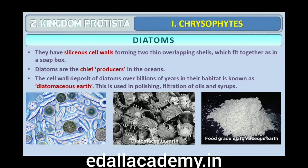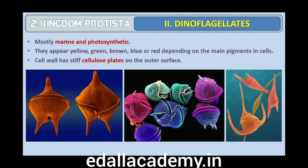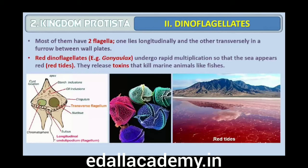Second are dinoflagellates. These organisms are mostly marine and photosynthetic. They appear yellow, green, brown, blue or red depending on the main pigments present in their cells. The cell wall has stiff cellulose plates on the outer surface. Most of them have two flagella — one lies longitudinally and the other transversely in a furrow between the wall plates. Very often, red dinoflagellates (e.g., Gonyaulax) undergo such rapid multiplication that they make the sea appear red — called red tides. Toxins released by such large numbers may even kill other marine animals such as fishes.